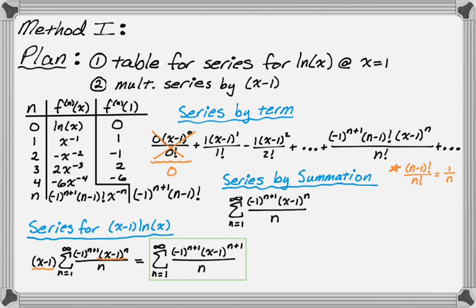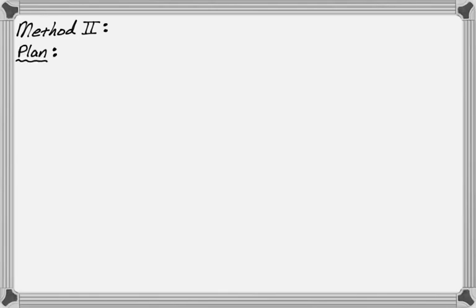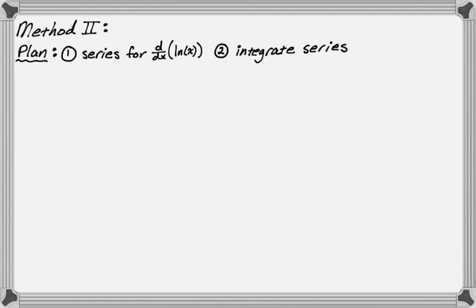Now let's do it a slightly different way — you can decide which you think is easier. My plan: I know the derivative of natural log of x is 1 over x, which is similar to the sum of a geometric series. So I'll write a series for the derivative of natural log of x, then integrate that series to get back to a series for natural log of x, and then multiply by (x minus 1).